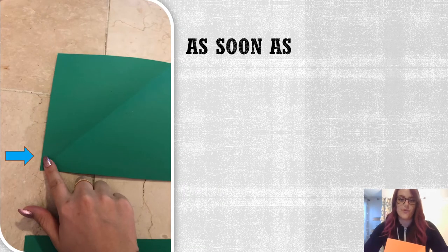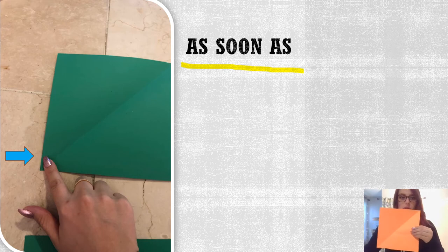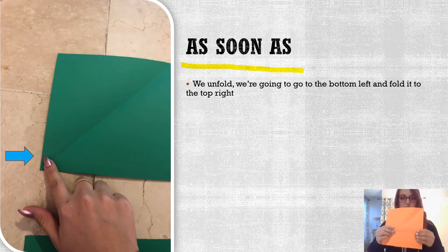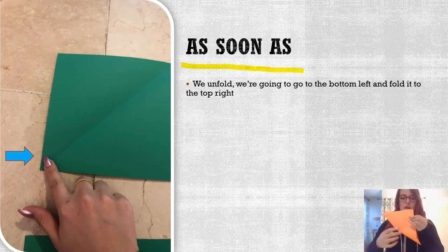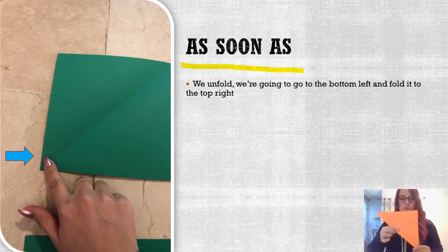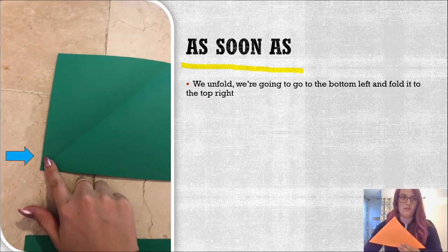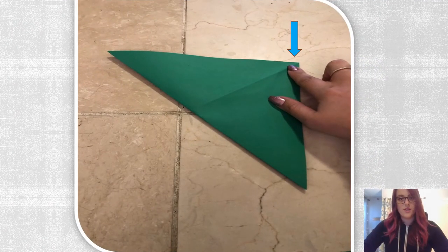As soon as we unfold it, it should look like this. We're going to fold from the opposite side — go to the bottom left and fold it to the top right. This will make a crease on the opposite side. When folding your paper, make sure you fold it super tight so it holds the perfect shape and doesn't pop back up.